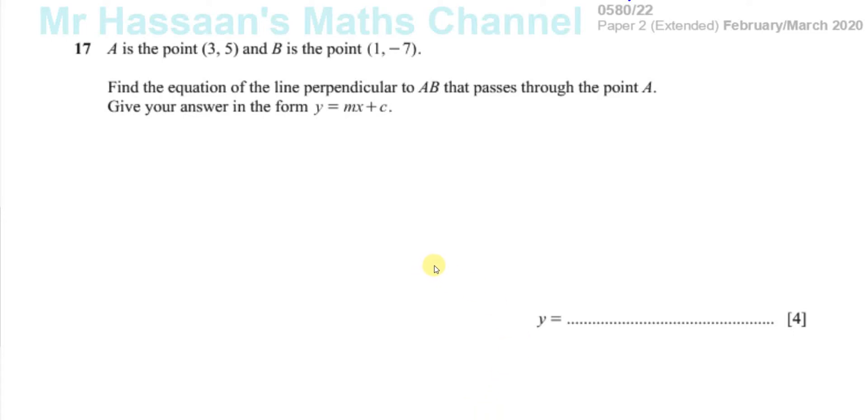Okay, now for question number 17 from the February-March 2020 paper. A is the point (3, 5) and B is the point (1, -7). Find the equation of the line perpendicular to AB that passes through point A. Give your answer in the form Y equals MX plus C.